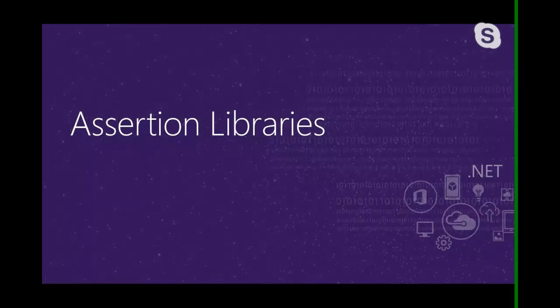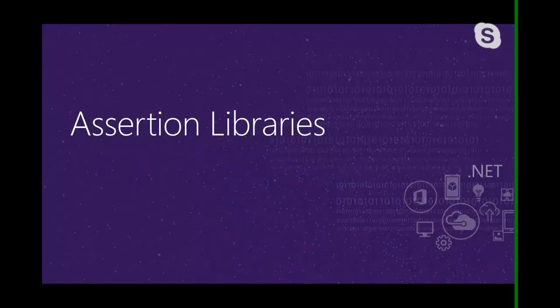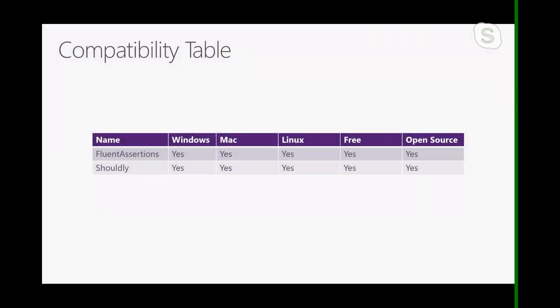Next up are assertion libraries, which allow you to assert that various conditions in your tests have been met. For many people there's no need for a separate assertion library because most unit test frameworks come with those out of the box, like xUnit's Assert.Equal. However, we do have tools purely focused on allowing us to easily assert that conditions are met. Here are two assertion-exclusive libraries: Fluent Assertions and Shouldly — both cross-platform, free, and open source.